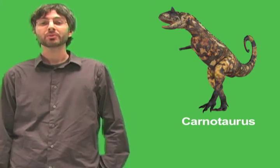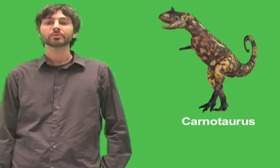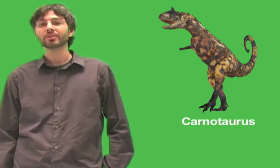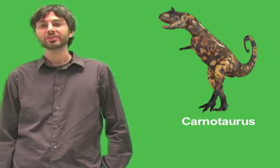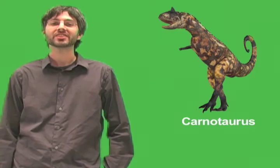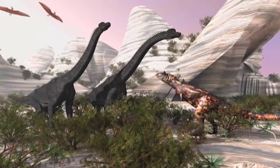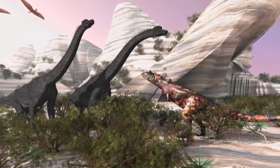Nonetheless, Carnotaurus was probably a fearsome predator. It grew to about 25 feet, or 7.5 meters long, and it weighed between 1 and 2 tons, or between 0.9 and 1.8 metric tons. It also had a mouthful of sharp teeth that had serrated edges like a saw blade.